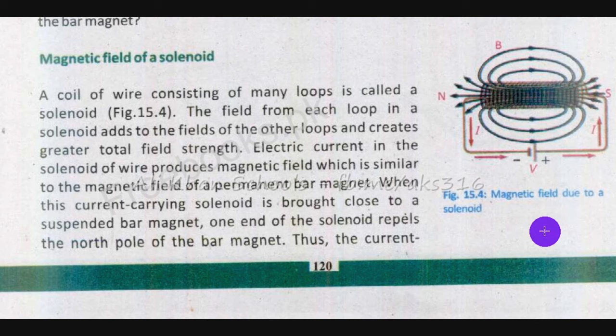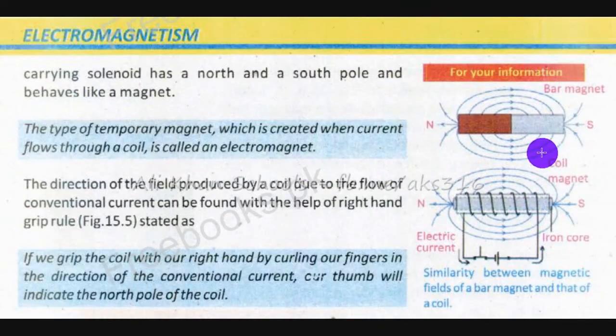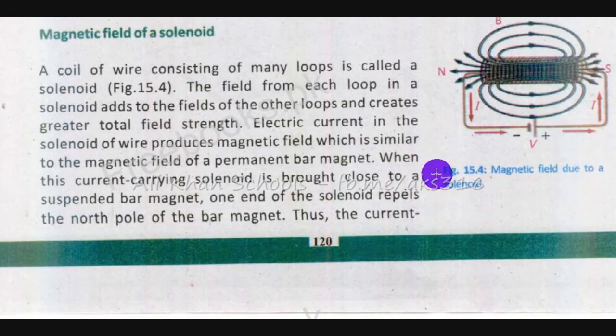Lekin kehta hai ke jab hum is solenoid ki magnetic field produce ho rahi hai, hum kya karte hain — ek bar magnet lete hain. Bar magnet woh hota hai jisme ek north aur south pole hota hai. Uski figure kahin bani hogi — yeh bar magnet hai, theek hai.